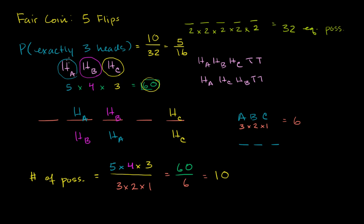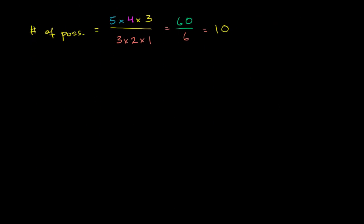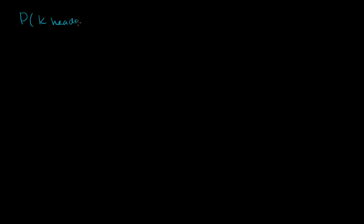In the last video, we figured out the probability of getting exactly 3 heads when we have 5 flips of a fair coin. What I want to do in this video is think about it in a slightly more general way. We're still going to assume we have a fair coin, although we'll shortly see we don't have to make that assumption. What I want to do is figure out the probability of getting k heads in n flips of the fair coin.